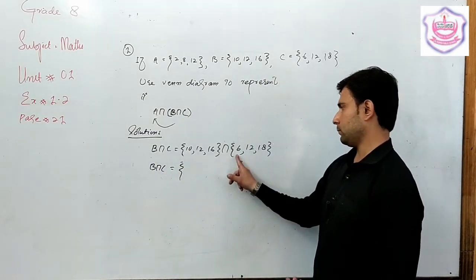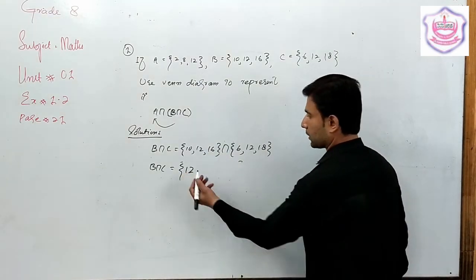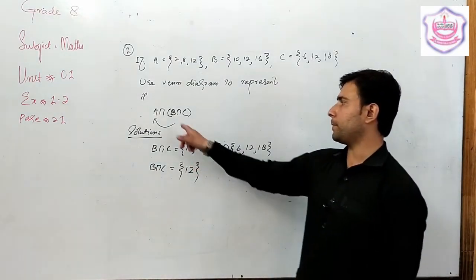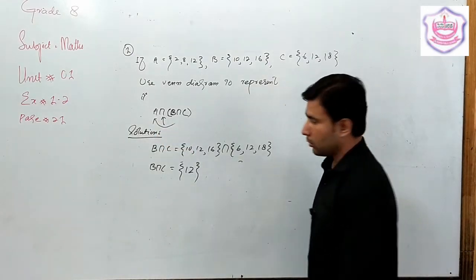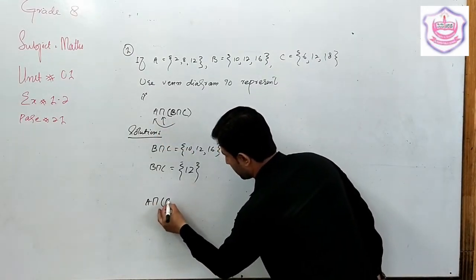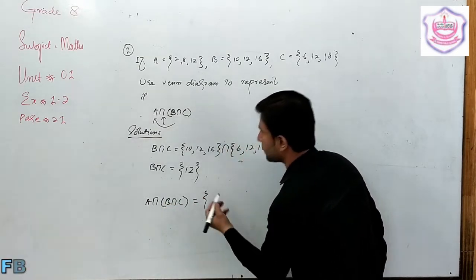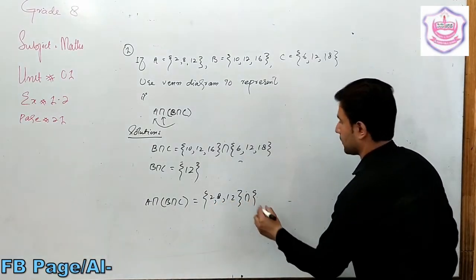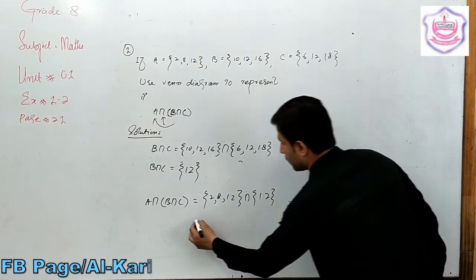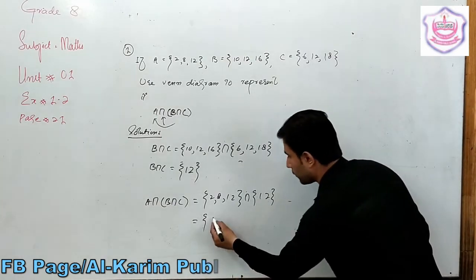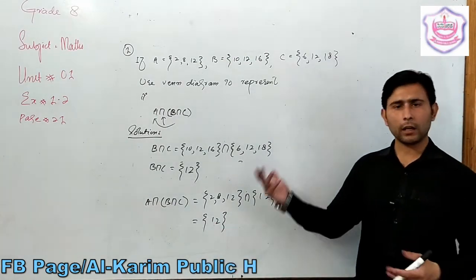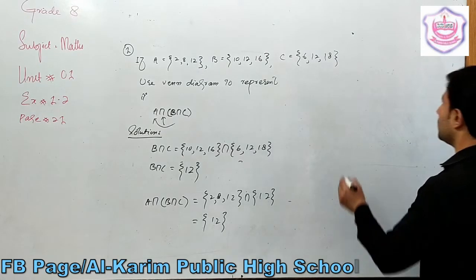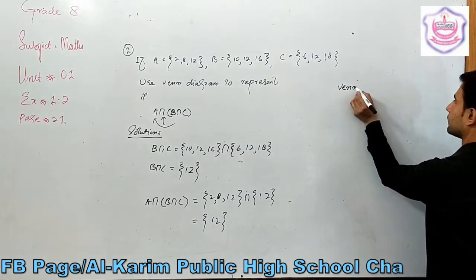12 is common to both B and C. So B ∩ C = {12}. Then A intersection (B intersection C): the common elements of A = {2, 8, 12} and {12} gives A ∩ B ∩ C = {12}. The result is 12. In the Venn diagram, only the central portion common to all three circles — representing 12 — is shaded.